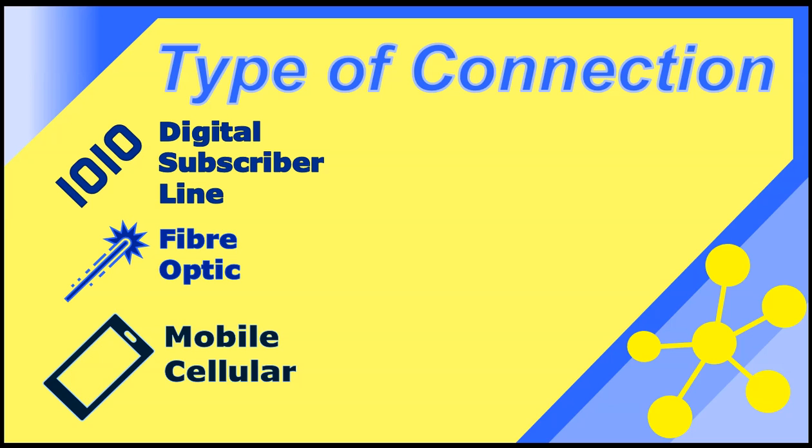You also get other types which aren't as commonly used, like satellite and cable internet. Satellite uses a satellite in orbit to transmit and receive data, while cable uses a cable television network to provide internet access.